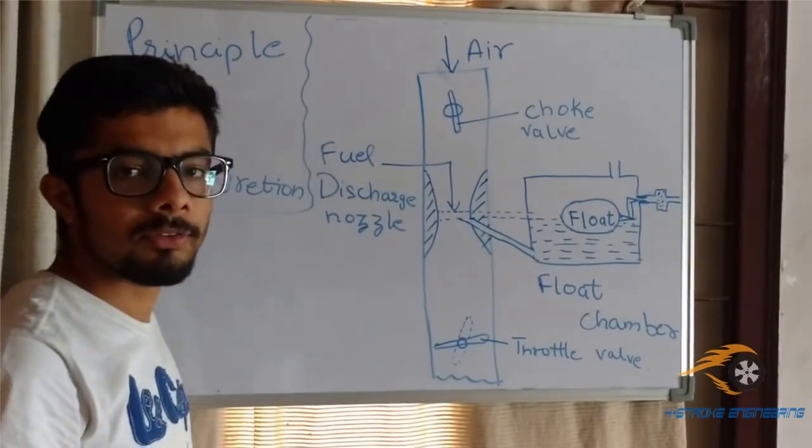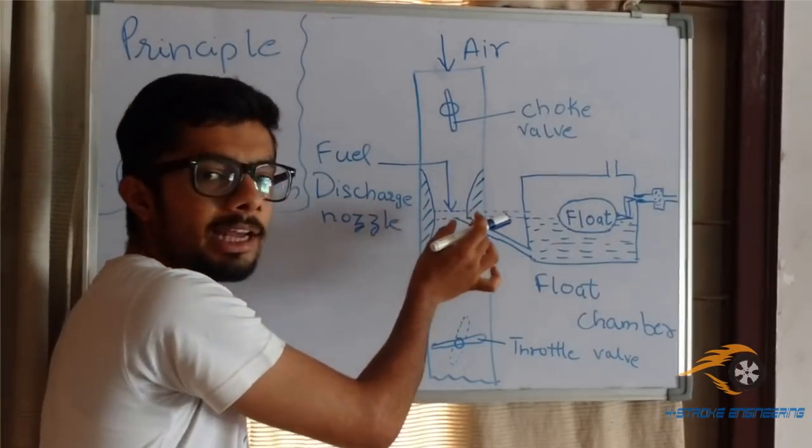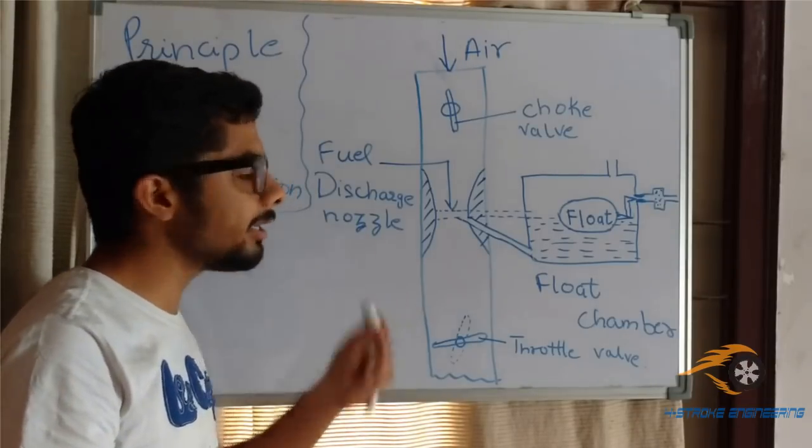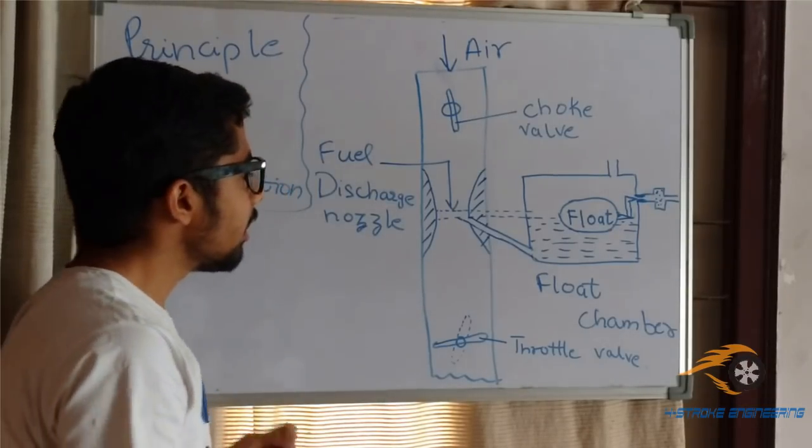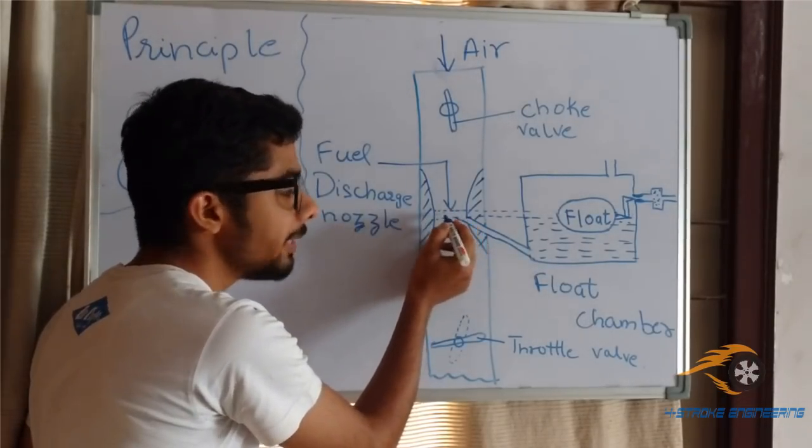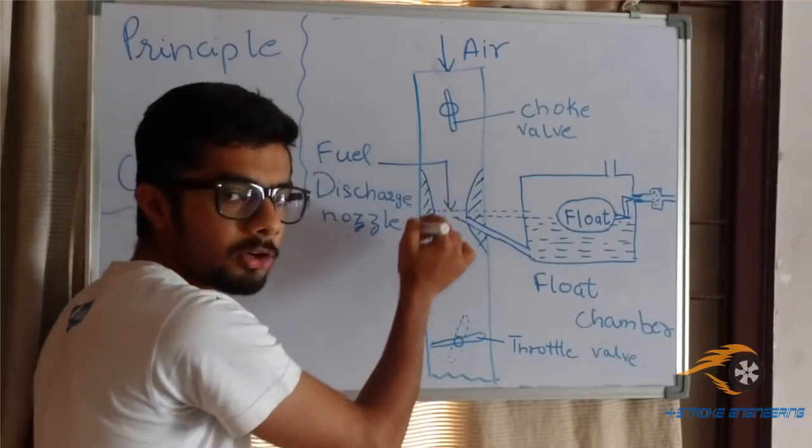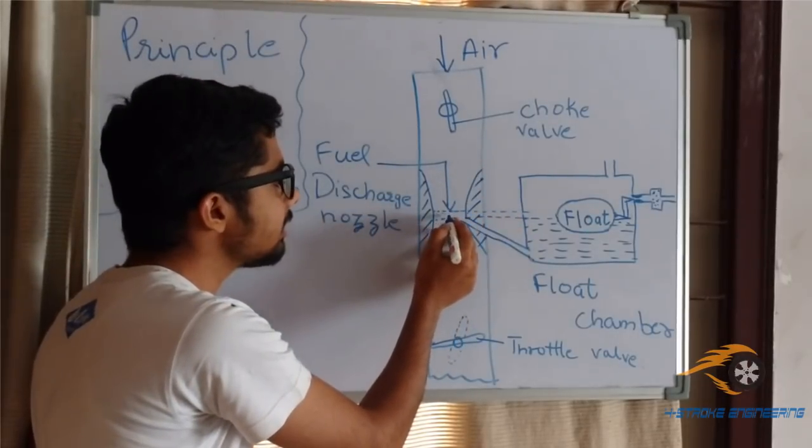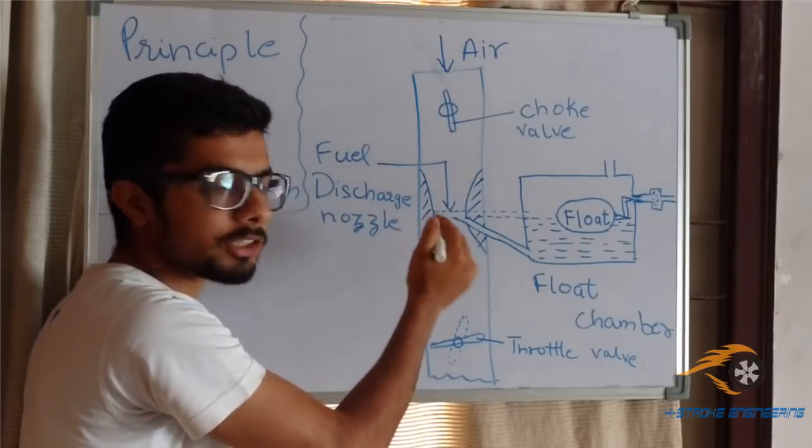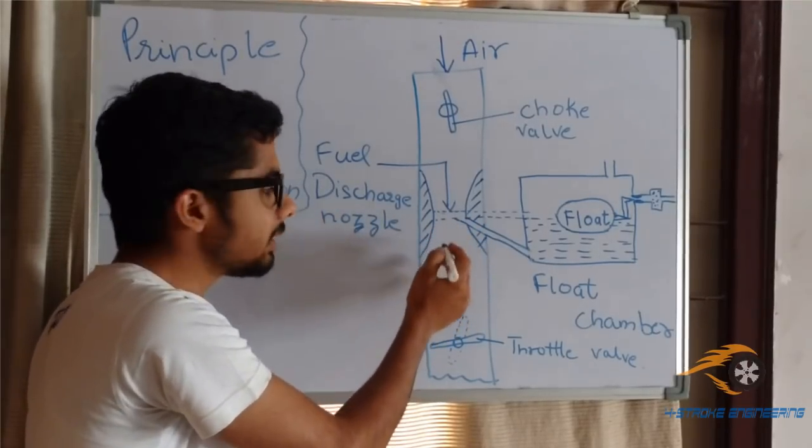Now we all must have known the principle of venturi that less of the area, more will be the velocity of air. The same exact principle is applied in carburation. As you can see, the area over here is very less, is minimum in the entire cross-section area. So as the area is minimum, the velocity of air will be maximum. As a result, the suction pressure created will be maximum.